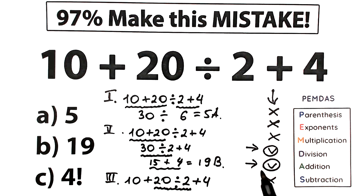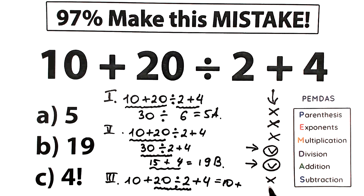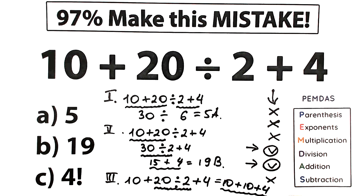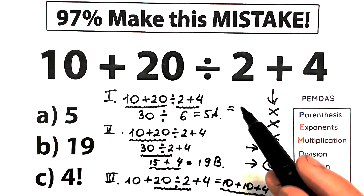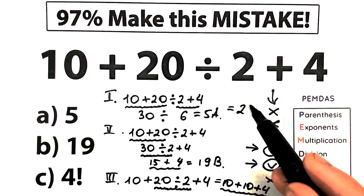This is a really important moment. We have 10 plus (20 divided by 2) plus 4. So 20 divided by 2 equals 10, giving us 10 plus 10 plus 4. That's basic addition, and we can easily write that our answer equals 24.